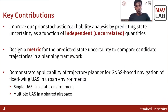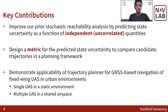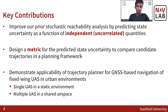Thus, the key contributions of this work are as follows. First, we improve our prior reachability analysis by predicting state uncertainty as a function of independent and uncorrelated quantities. Next, we design a metric for the predicted state uncertainty in order to compare multiple candidate trajectories in a trajectory planning framework. And finally, we demonstrate the applicability of the trajectory planner for GNSS-based navigation of fixed-wing UAS in urban environments, showing results for both a single UAS in a static environment and for multiple UAS in a shared airspace.